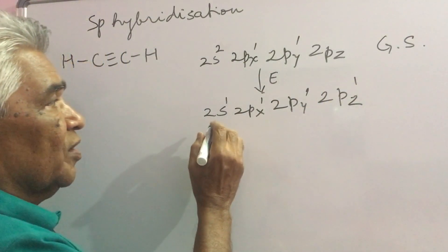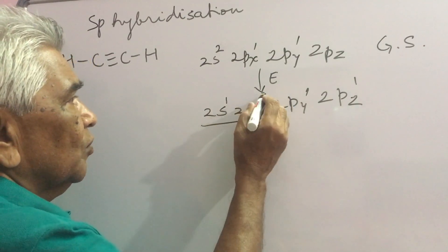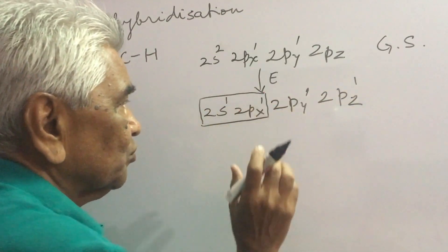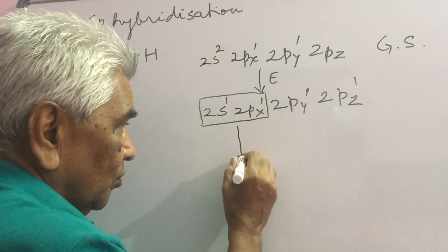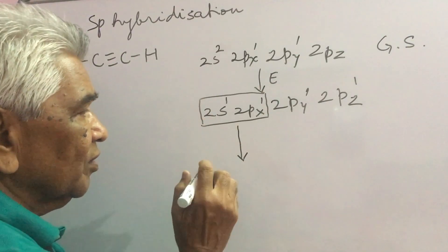SP hybridization requires blending of only two orbitals, 2S and one of these three 2Ps. So, two new hybrid orbitals are formed.